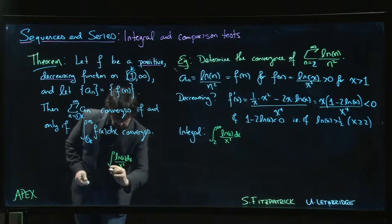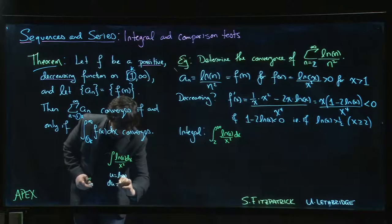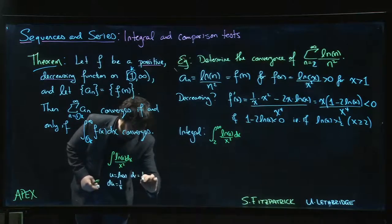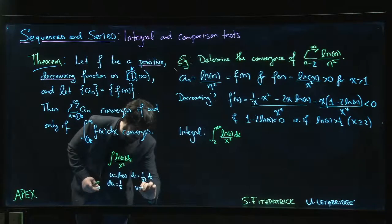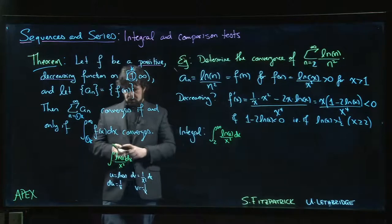So if we have a natural log, that's always our u. So u is log x, du is 1 over x, dv is 1 over x squared dx. So v is minus 1 over x.